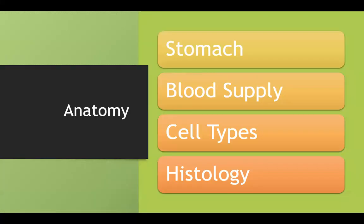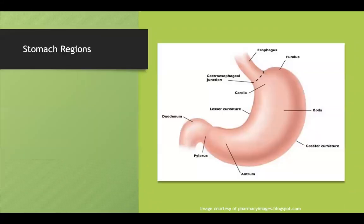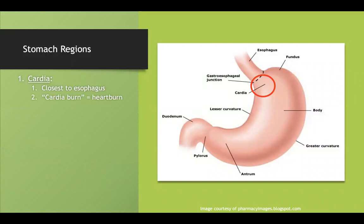Starting with anatomy, I want to talk about the stomach regions and some other anatomical landmarks. The cardia is the region of the stomach closest to the esophagus. A good mnemonic: cardia burn is heartburn, and we know heartburn affects our esophagus — so it's an easy way to remember that the cardia is the closest region.